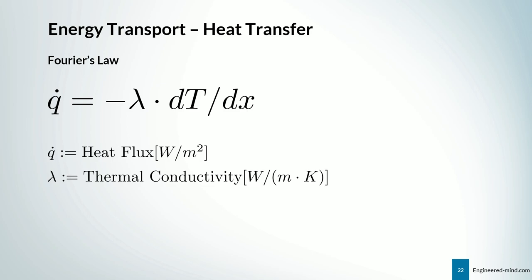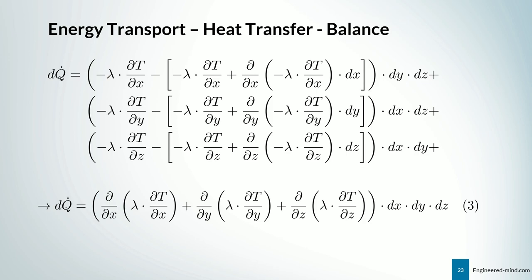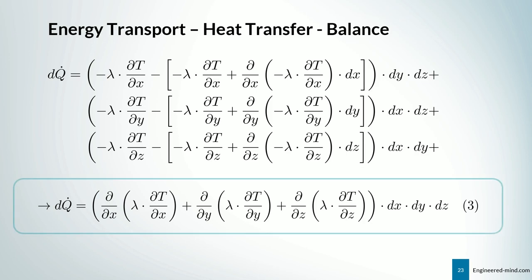For the energy transport via heat transfer we use Fourier's law, which you may know from thermodynamics, physics, or finite element analysis. The heat flux q̇ equals −λ·(dT/dx), where λ is the thermal conductivity. The minus sign indicates that the gradient goes from higher to lower temperatures, confirming the thermodynamic axiom. Applying the energy balance and letting terms drop out, we end up with the beautiful Equation 3 for dq̇.